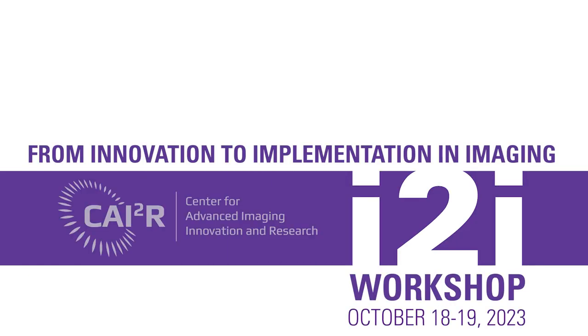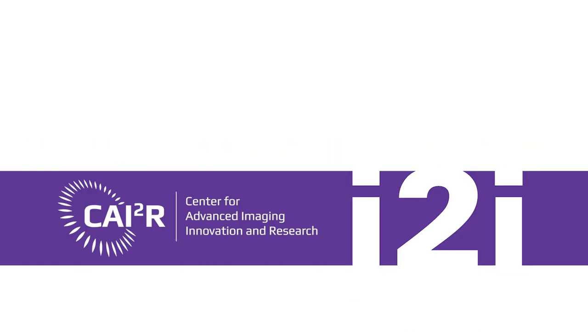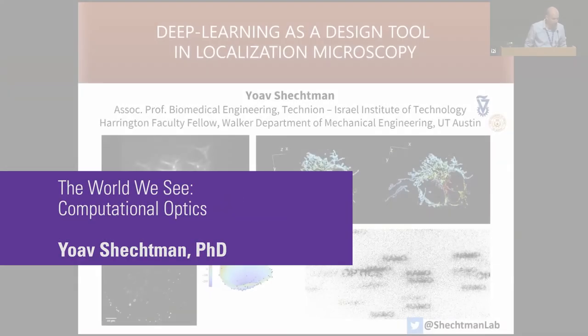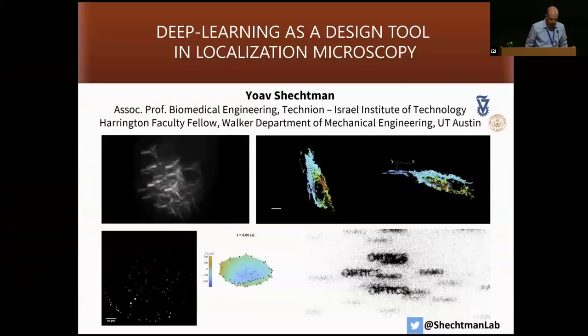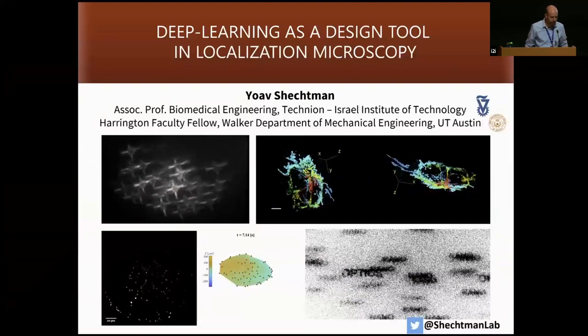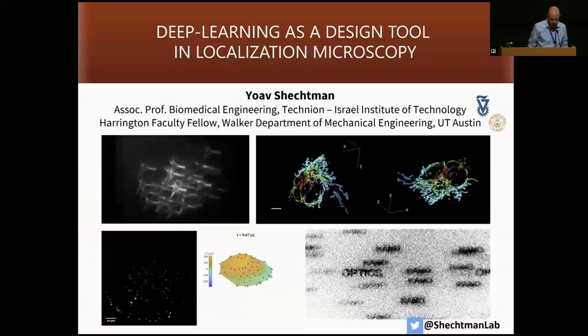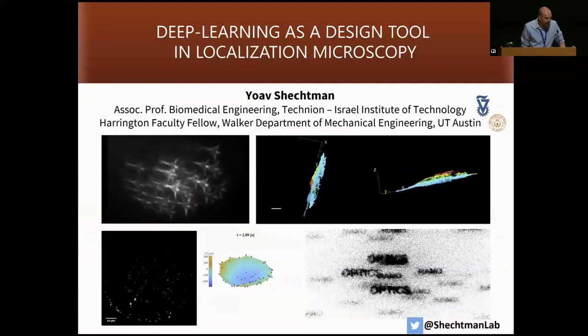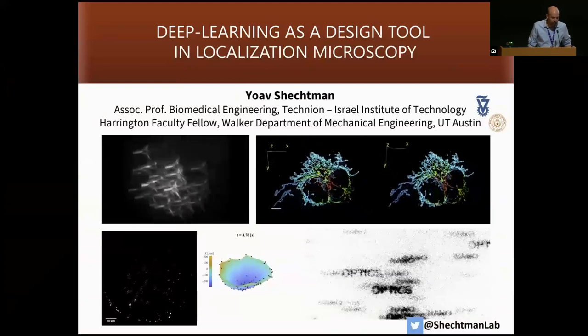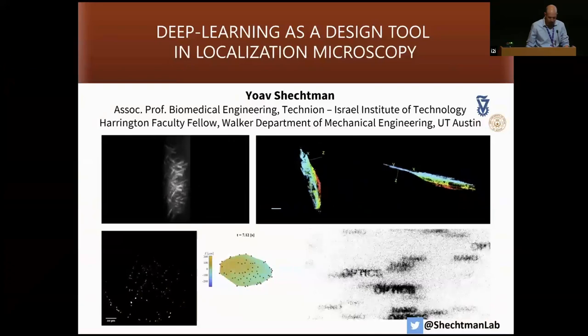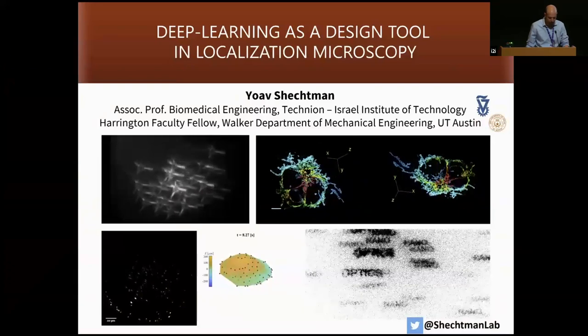Thank you very much for the introduction. I'm really happy to be here and learn about MRI. Thanks to the organizers for inviting me here. I'm going to zoom in slightly from the previous talk about 20 orders of magnitude to looking at cells. This is deep learning as a design tool in localization microscopy, but as we'll see, it's a bit broader than this.